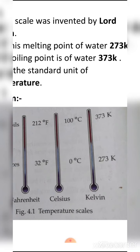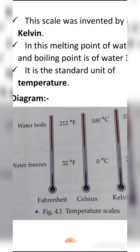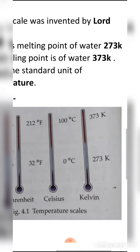The boiling point in Kelvin is 373 Kelvin. In the diagram, the lower fixed point and the upper fixed point are shown. The lower fixed point is the melting point and the upper fixed point is the boiling point. You can see all three temperature scales in this diagram.